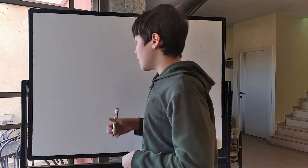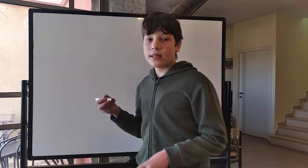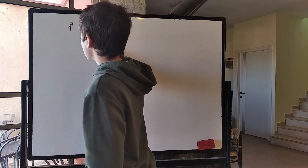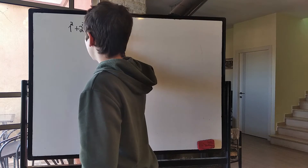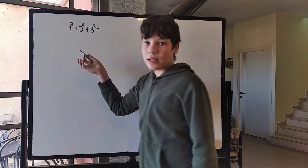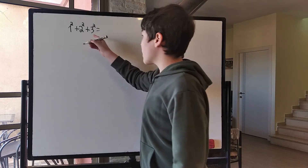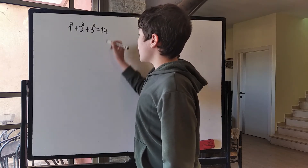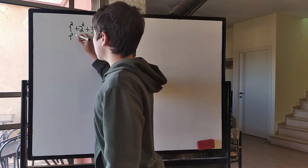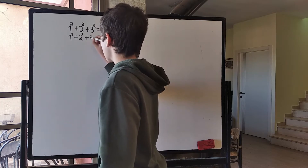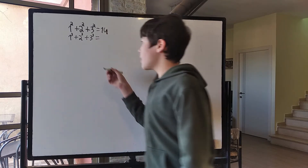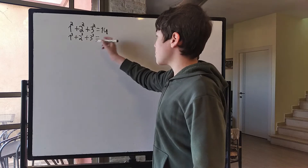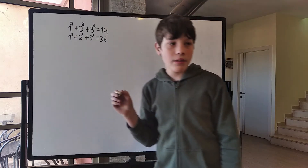What I am going to talk about is summing sequences of powers of numbers. For example, we have 1 squared plus 2 squared plus 3 squared and what that will equal. In this case, we have 9, 4, and 1, so we get 14. And maybe we want to do 1 cubed plus 2 cubed plus 3 cubed, which equals something else.